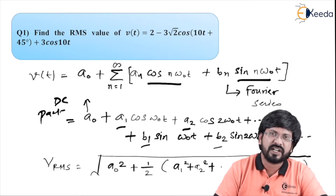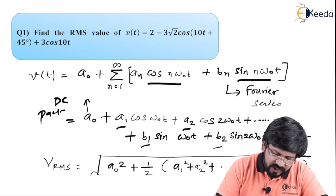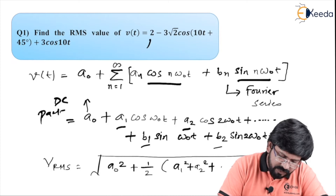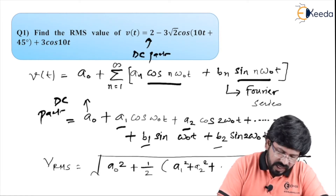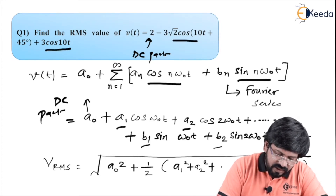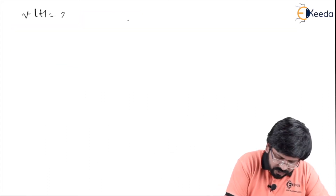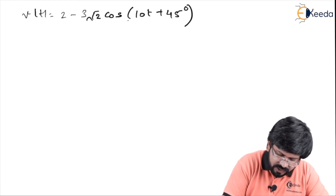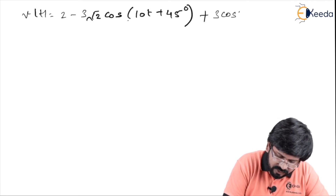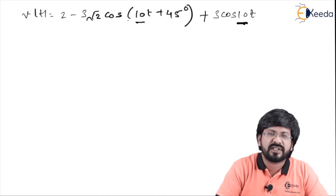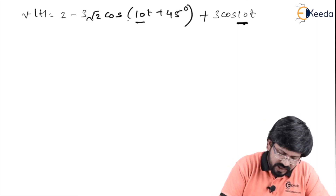Let's compare the given sum with the standard format. V(t) equals 2 minus 3 root 2 cos(10t + 45°) plus 3 cos(10t). We can recognize that 2 is the DC part. However, there are two cosine terms but both share the same frequency — 10t and 10t. We cannot have two separate cosine components with the same frequency, so we need to modify this. Let's see how to tackle this problem.